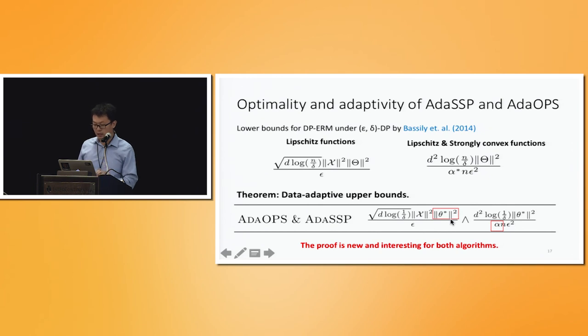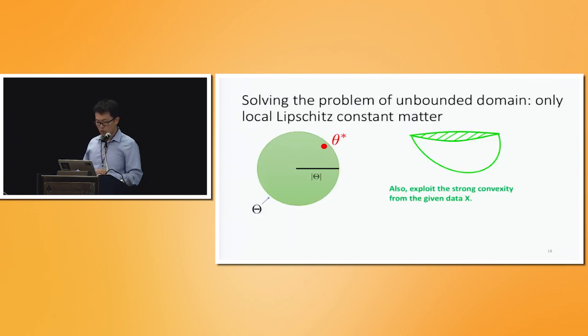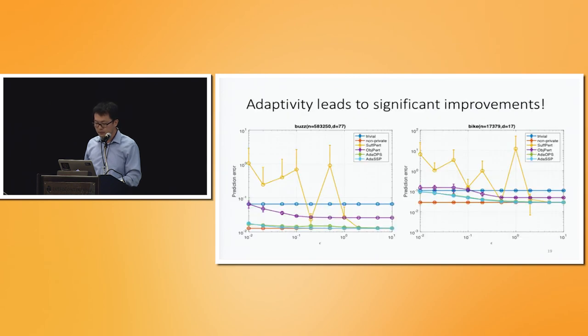And the proof is interesting. I don't have time to talk about it, but if you are interested, feel free to look at the paper. So the idea is that effectively all we need to depend upon is a local Lipschitz constant rather than the global Lipschitz constant that holds everywhere in the space. And this actually leads to significant improvements.